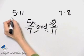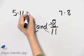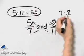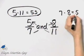Well, 5 times 11, that is 55. And what is 7 times 8? That is 56.